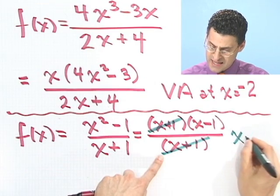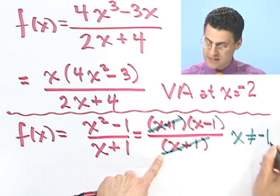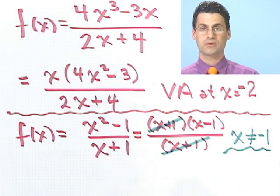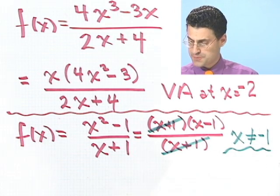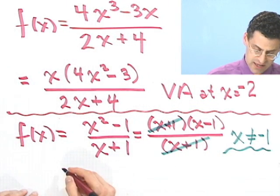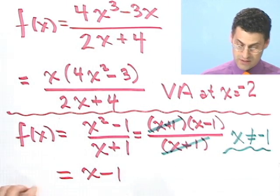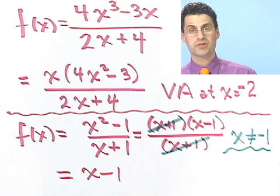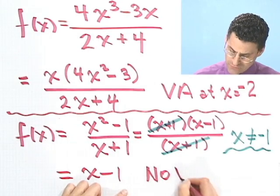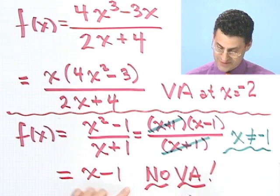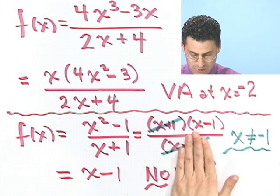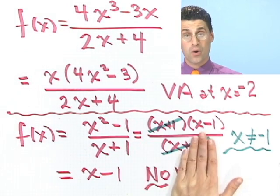But remember, whenever you cancel, you have to make a promise to me. You have to promise that you're not dividing by zero. So in fact, you can only do this as long as x does not equal negative 1. So you have to promise that x doesn't equal negative 1. But given that as a promise, then you can cancel away. And I see that this function just equals x minus 1. Well, that's just a straight line. So in fact, this has no vertical asymptote at all.